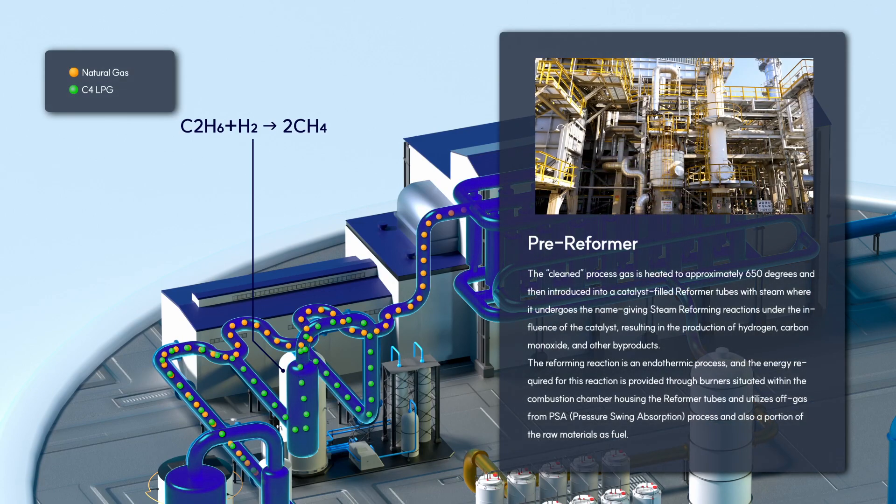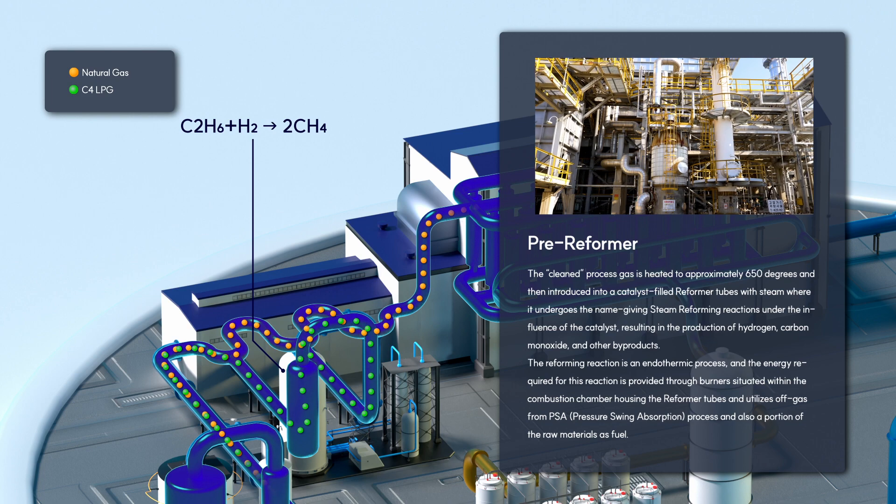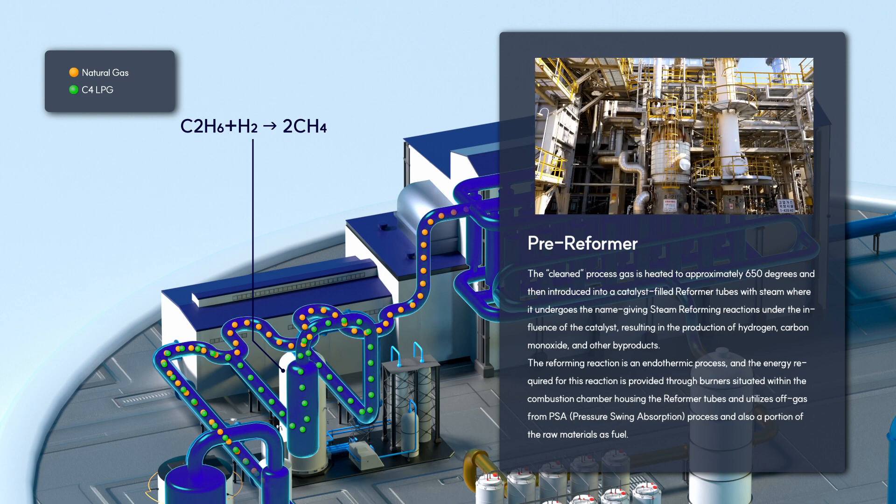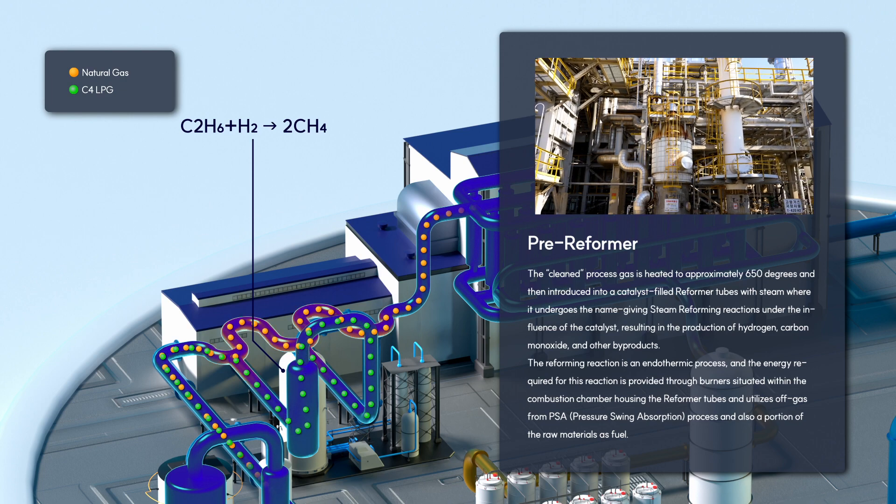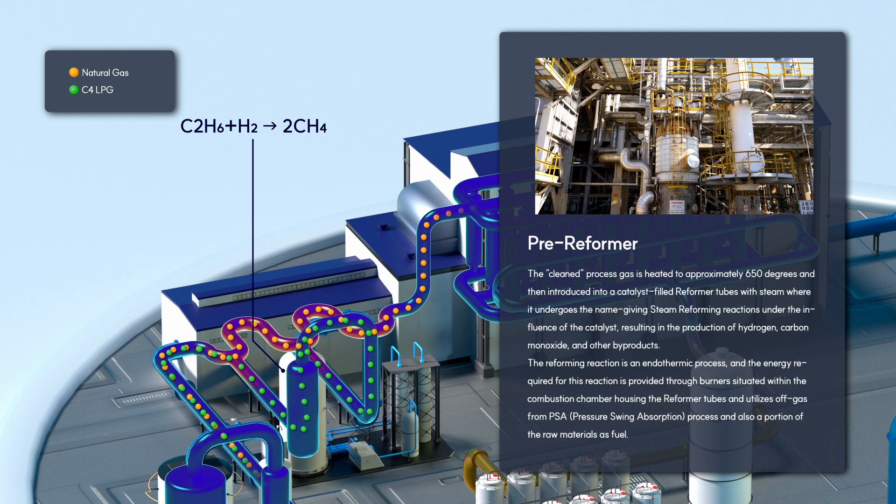The cleaned process gas is heated to approximately 650 degrees and introduced into catalyst-filled reformer tubes with steam, where it undergoes steam reforming reactions under the influence of the catalyst, resulting in the production of hydrogen, carbon monoxide, and other byproducts.